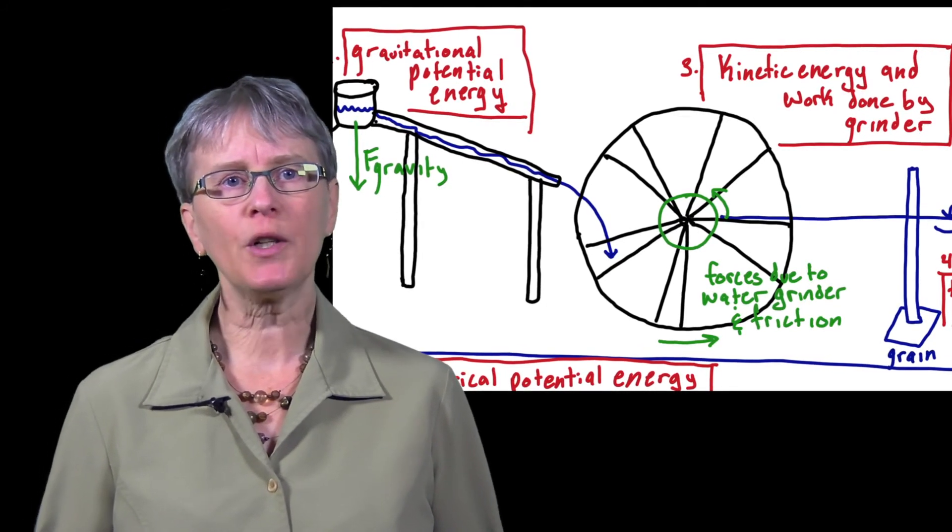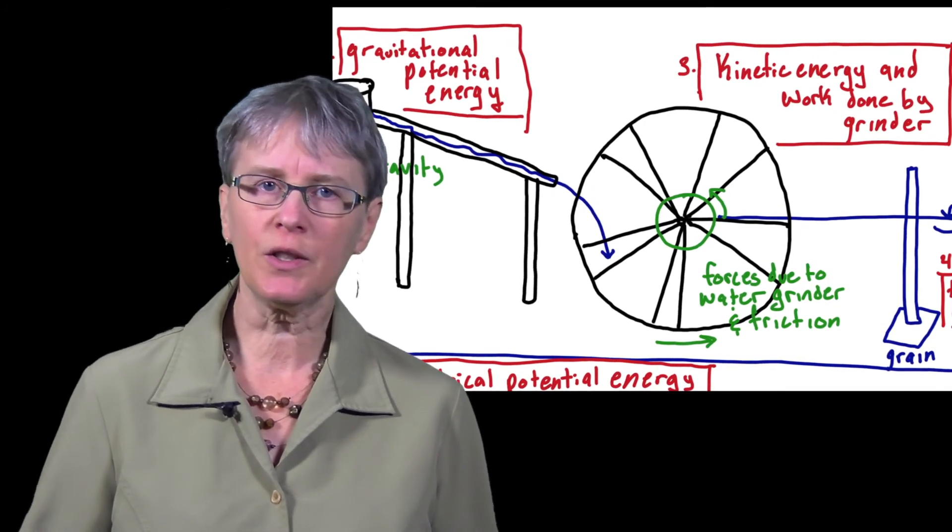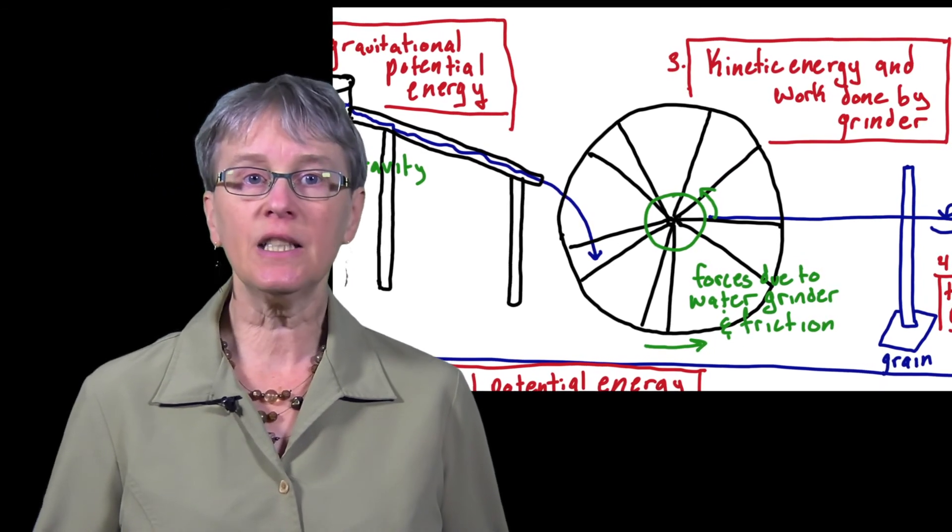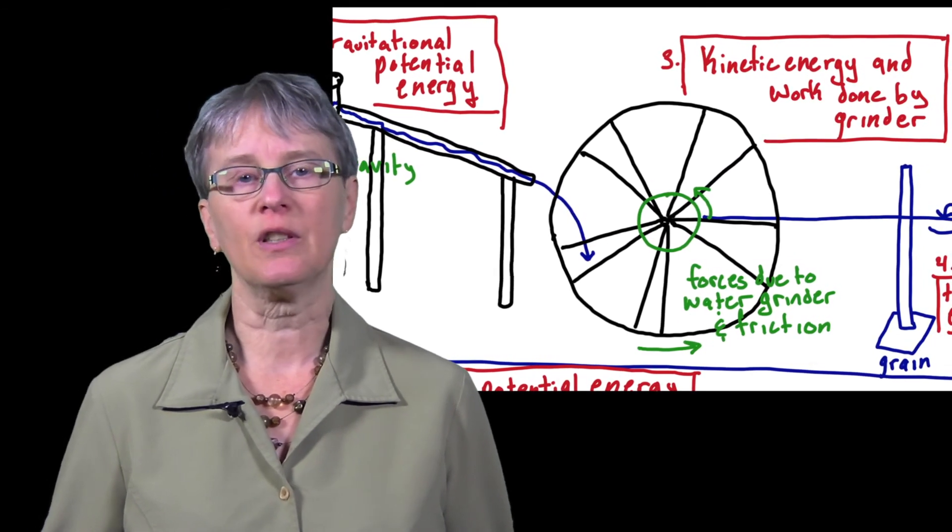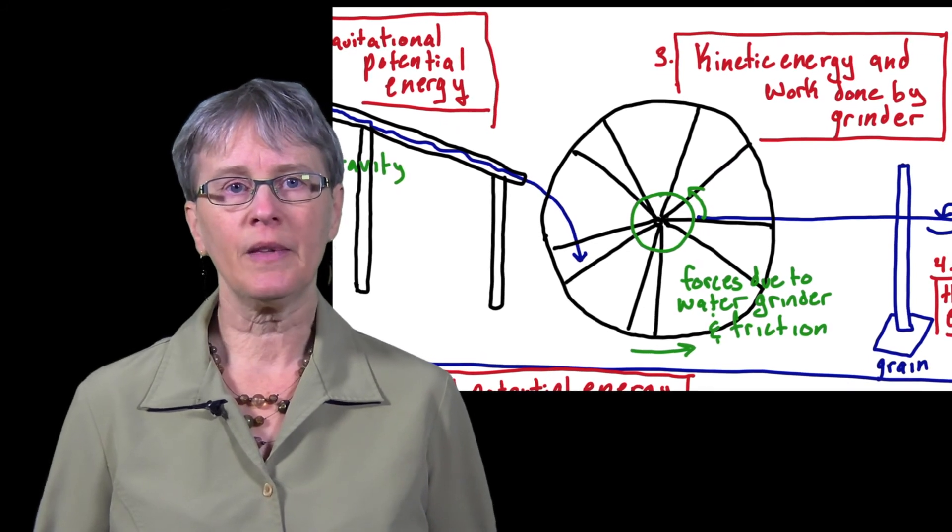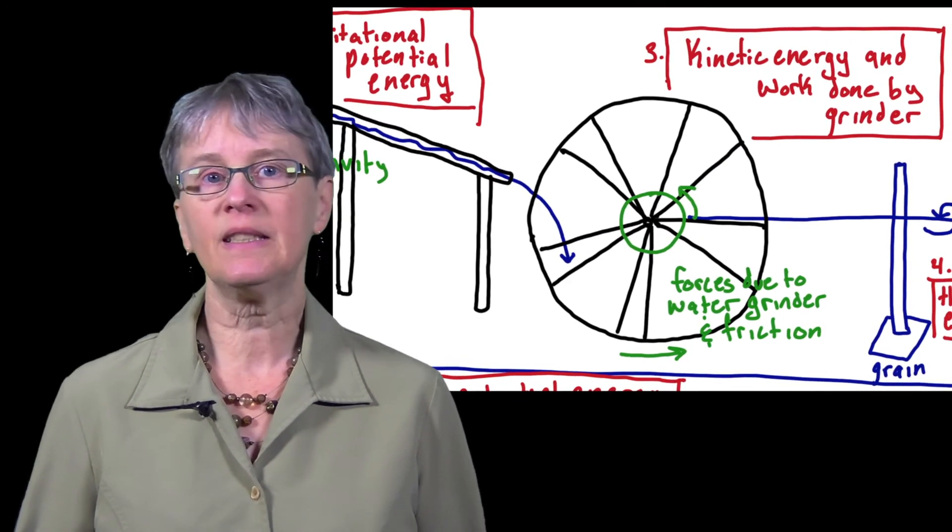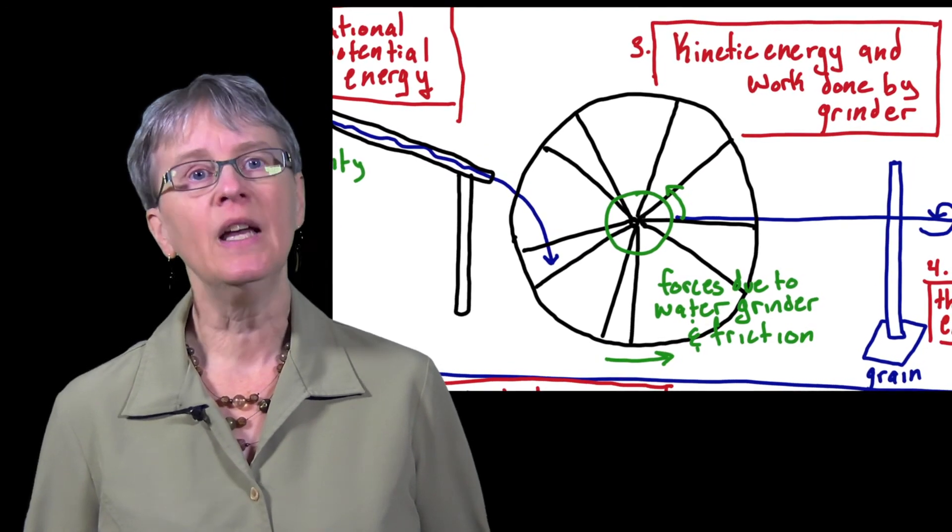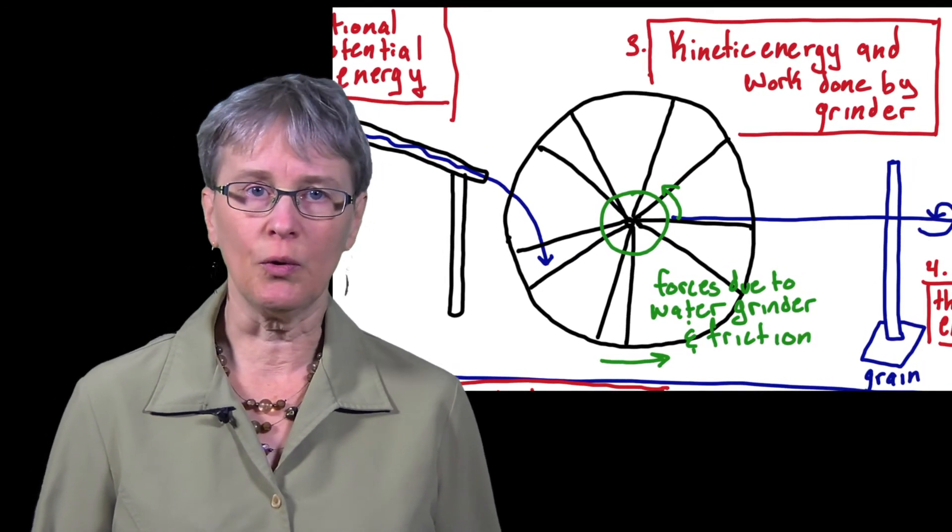In terms of forces, the water wheel exerts a force on the wheel in one direction, and the grinders exert a force in the other direction. In addition, friction will also exert a force that slows down the water wheel. As long as the force exerted by the water wheel exceeds the force from the grinders and friction, the wheel will keep turning and the grinders will continue to do useful work.